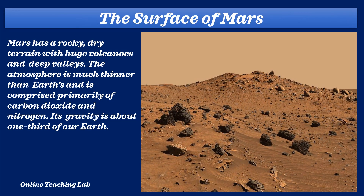Mars has a rocky, dry terrain with huge volcanoes and deep valleys. The atmosphere is much thinner than Earth's and is comprised primarily of carbon dioxide and nitrogen. Its gravity is about one third of our Earth.